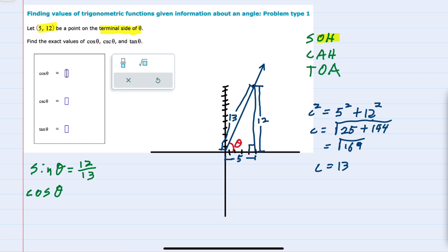Cosine of theta is adjacent over hypotenuse, which is 5 over 13. And tangent of theta is opposite over adjacent. Opposite is 12, adjacent is 5, so 12 over 5.